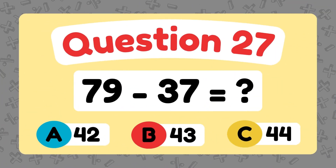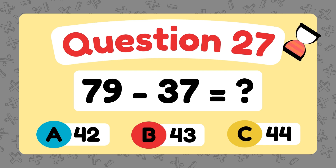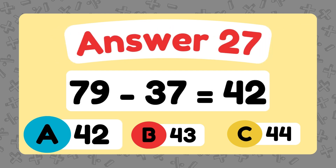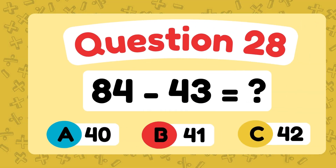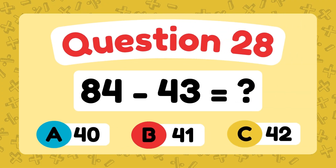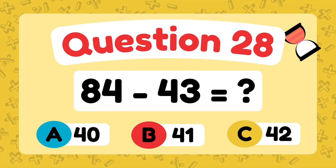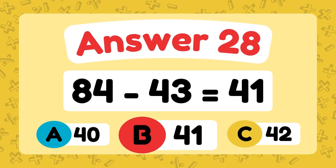What is 79 minus 37? The answer is 42. What is 84 minus 43? The answer is 41.